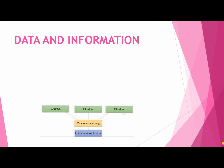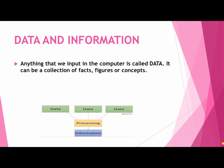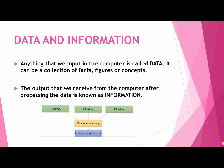Data and information. Anything that we input into the computer is called data. It can be a collection of facts, figures or concepts. The output that we receive from the computer after processing the data is known as information. As you can see in the figure, data after processing becomes information.